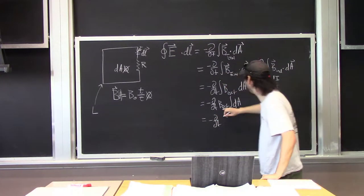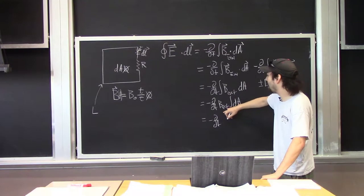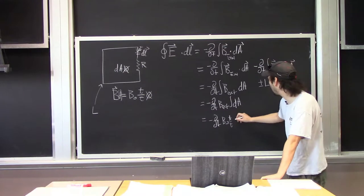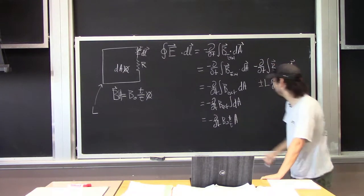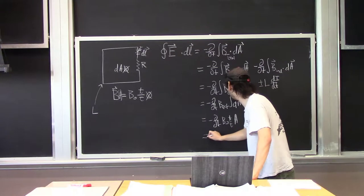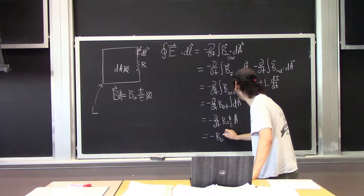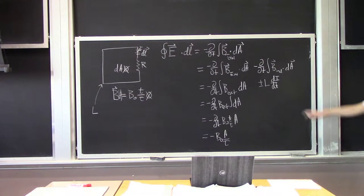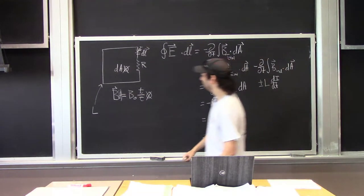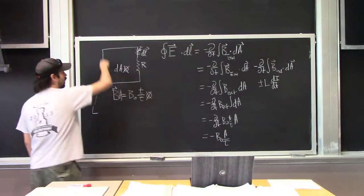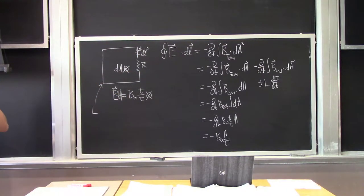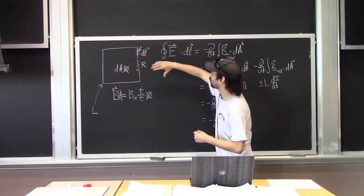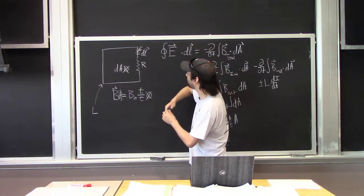So this is minus partial derivative with respect to time of B_external times A. Plugging in the magnitude of B_external as B0 * t / tau, we take the partial derivative and this gives us minus B0 * A divided by tau. Now let's look at what's going to happen with the induced term. Our current is going around in the chosen direction, so the induced magnetic field is going to be pointing in.